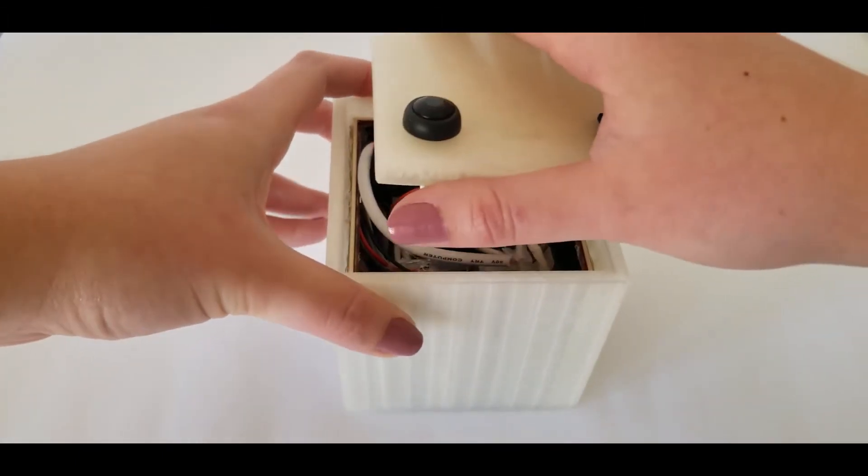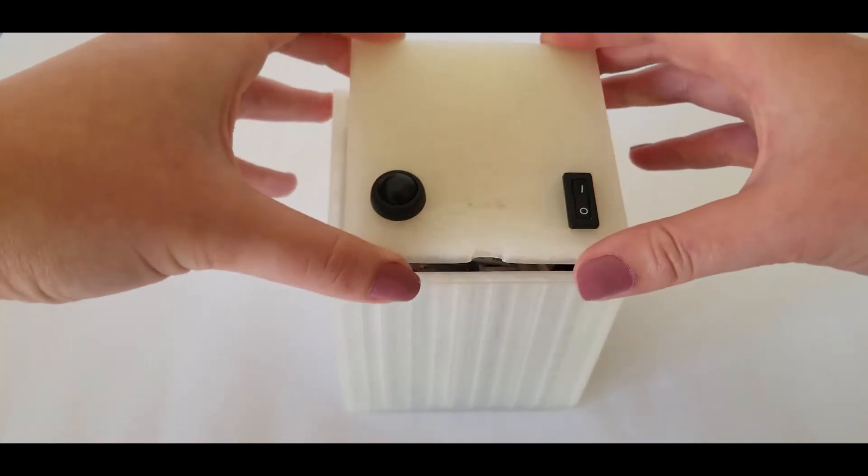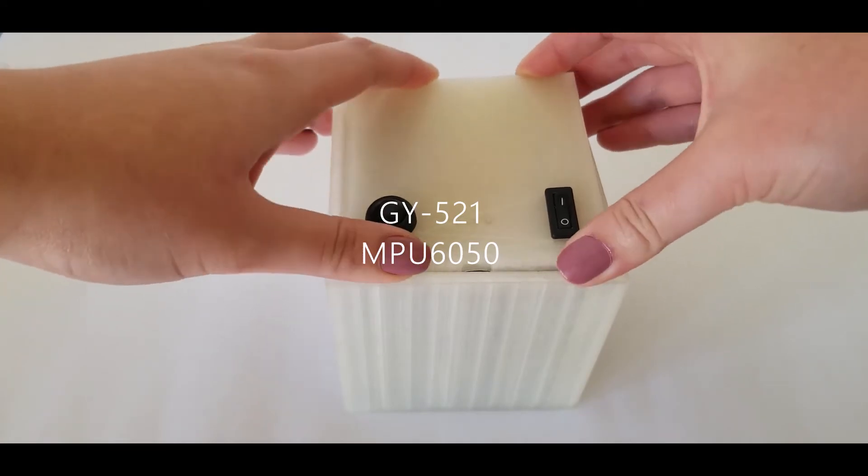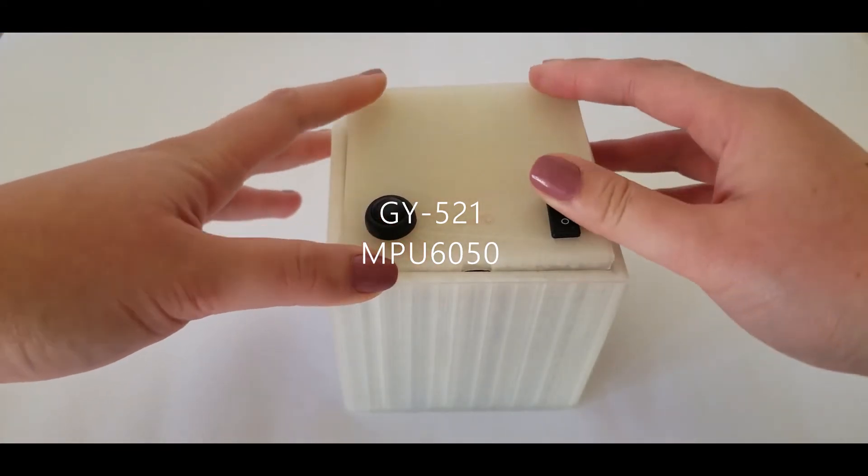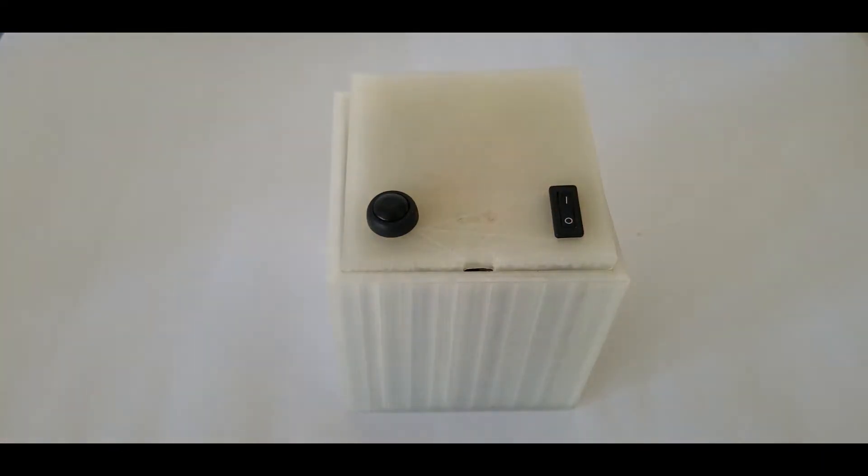For movement detection, I used a GY521 sensor, which contains an MPU 6050 model to obtain the measurements of the accelerometer and be able to detect which way the cube is being moved.